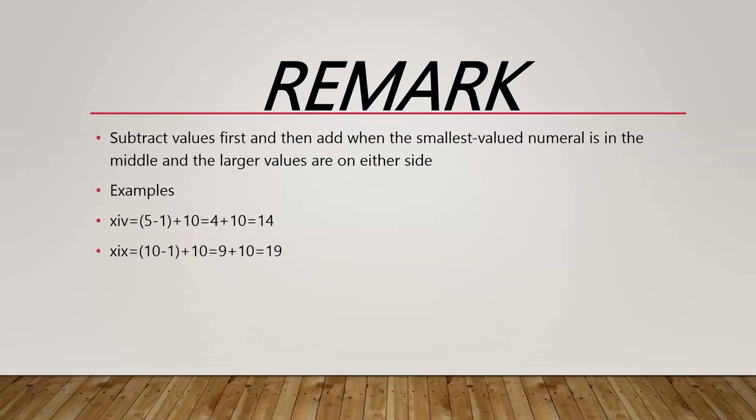For the second case, XIX, the I is the smallest value on the left, so we subtract 10 minus 1 to get 9, then add another 10 to get 19.